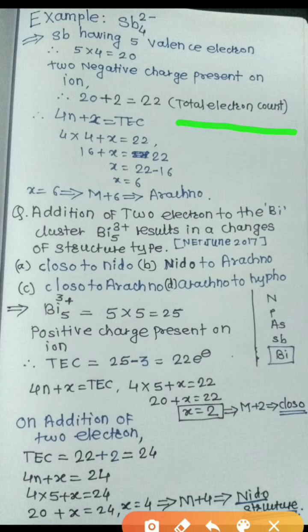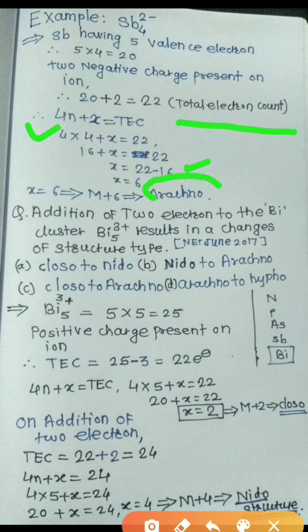By putting the total electron count into the formula 4n + x = total electron count: the number of metal atoms is 4, so 4 × 4 + x = 22. Since 4 × 4 = 16, we get 16 + x = 22, therefore x = 6. Since x = 6, this corresponds to the arachno structure. So Sb₄²⁻ has the arachno structure.